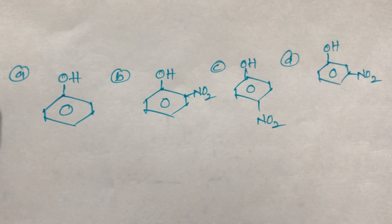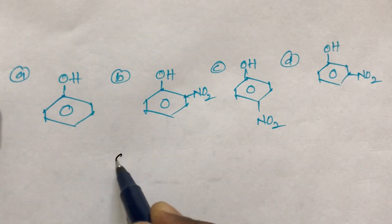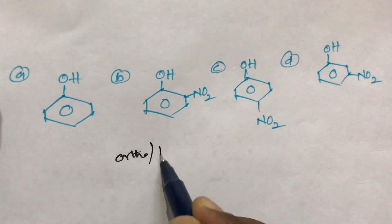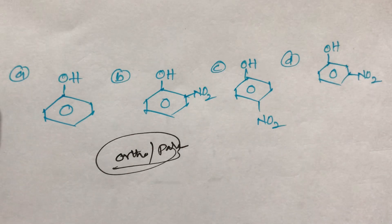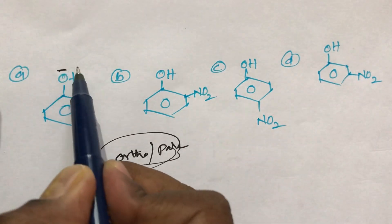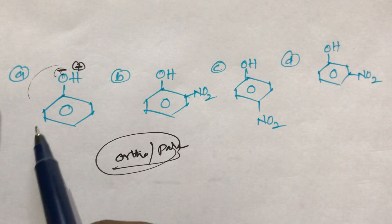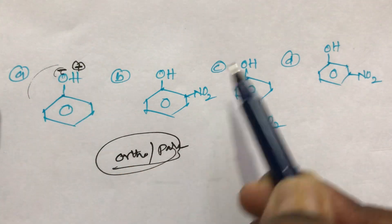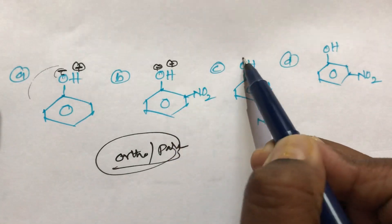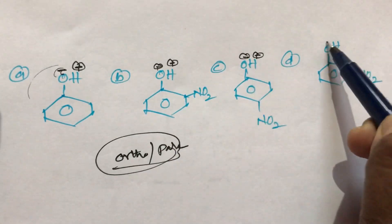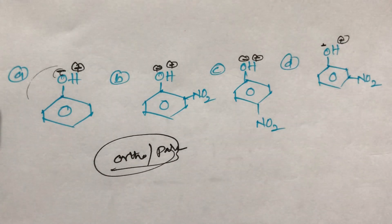Generally, phenols are ortho-para directors. The oxygen carries a negative charge and hydrogen carries a positive charge. This negative charge participates in resonance, so that is why H⁺ breaks off easily. Here also, oxygen has negative charge — positive, negative, positive, negative, positive — so out of these four, which one is of more acidic nature?